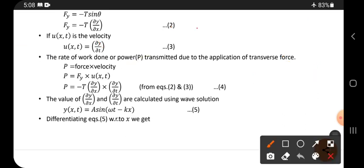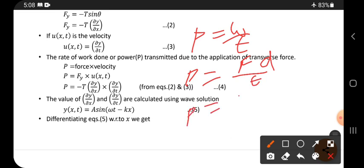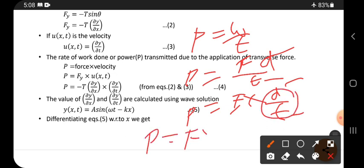The general formula of power is work by time. The general formula of work done is force times displacement. We can write power equals force times displacement by time. Displacement by time is velocity, so that is why force times velocity. This formula comes like this.